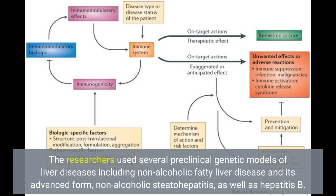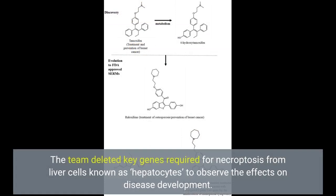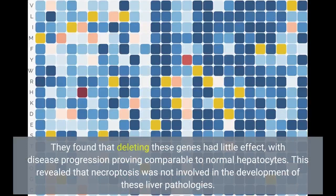We sought to address this research gap and define the role and relevance of necroptosis in common liver diseases, said study lead Dr. Dorfelinger. The researchers used several preclinical genetic models of liver diseases including non-alcoholic fatty liver disease and its advanced form, non-alcoholic steatohepatitis, as well as hepatitis B. The team deleted key genes required for necroptosis from liver cells known as hepatocytes to observe the effects on disease development. They found that deleting these genes had little effect, with disease progression proving comparable to normal hepatocytes.